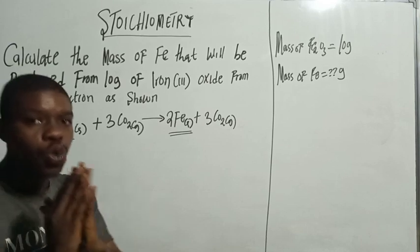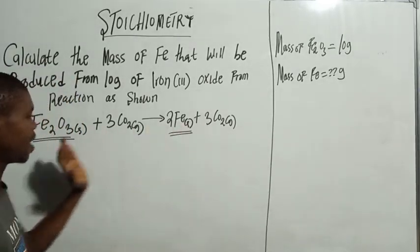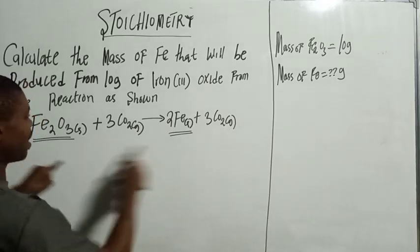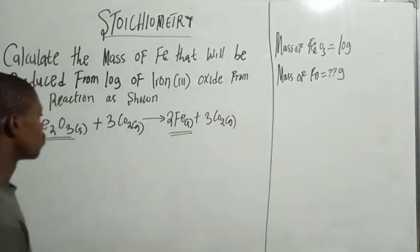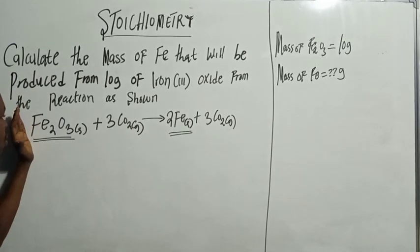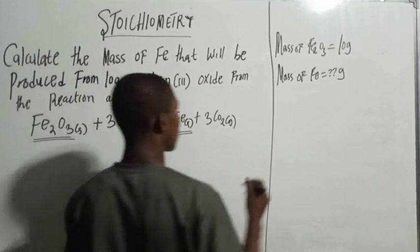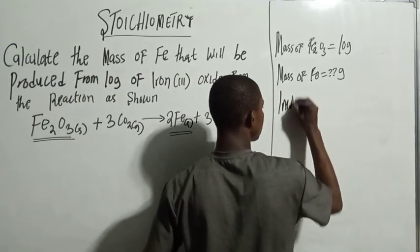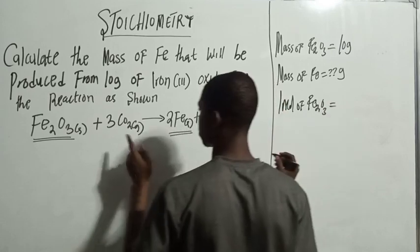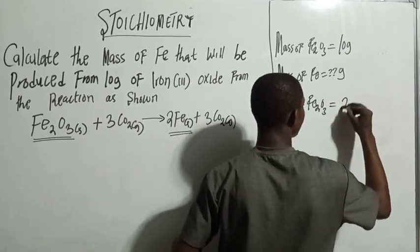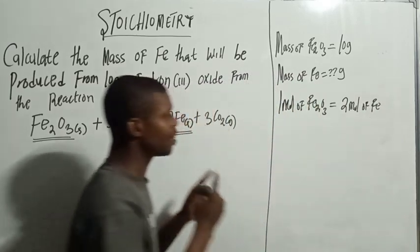The next thing you want to do is look at the relationship between the two substances from the balanced chemical equation. From the balanced equation, one mole of Fe₂O₃ produces two moles of Fe. So the molar ratio is 1 mol Fe₂O₃ to 2 mol Fe.